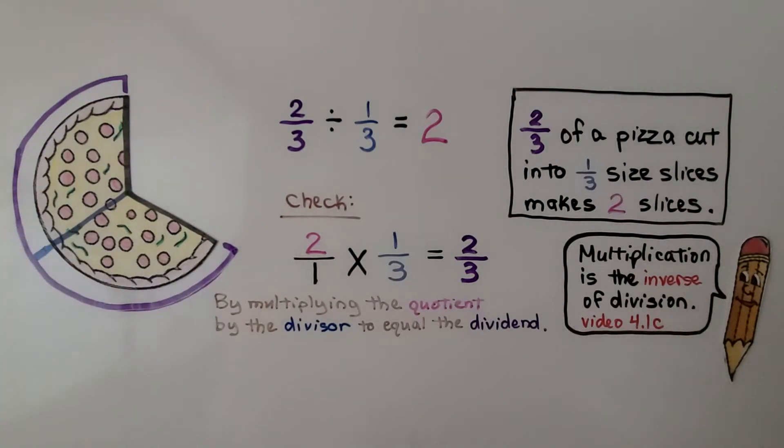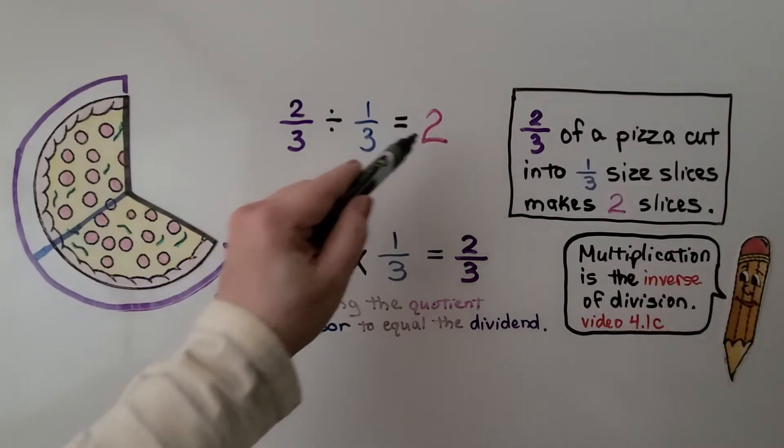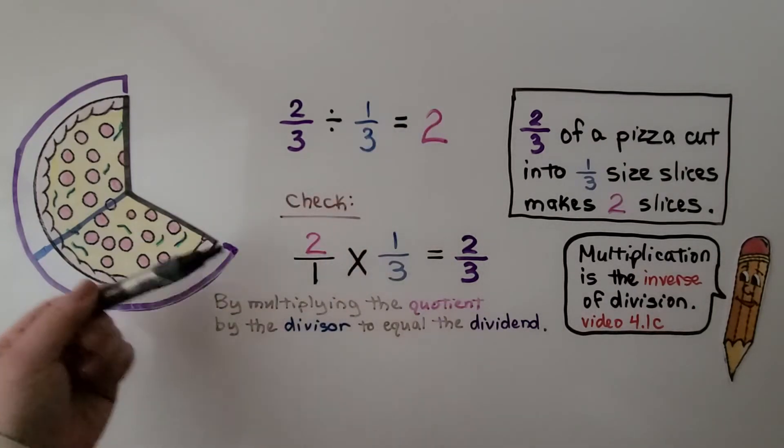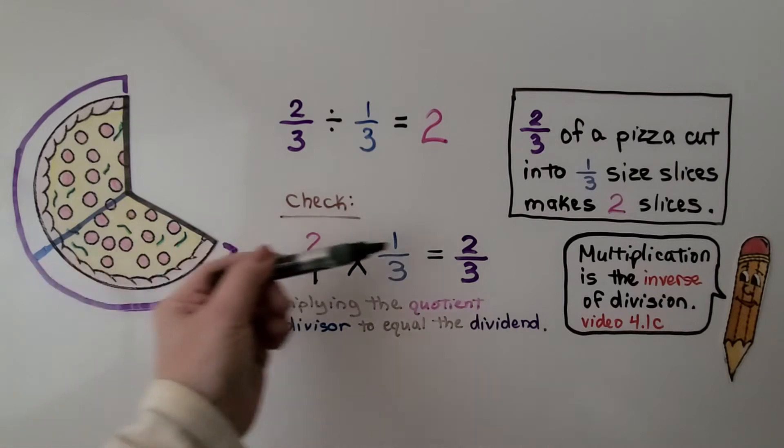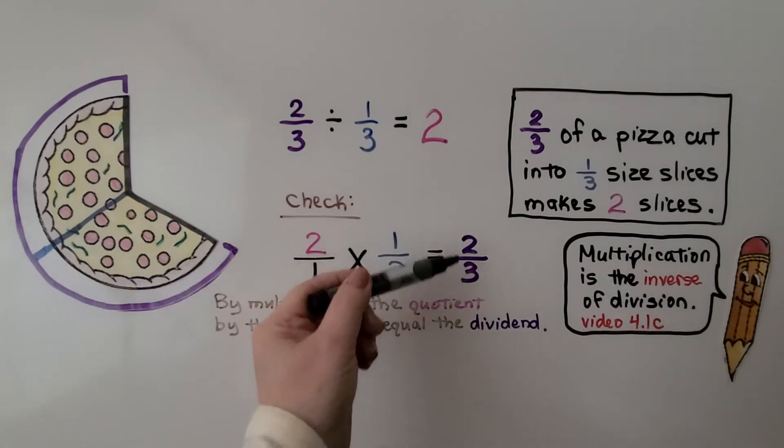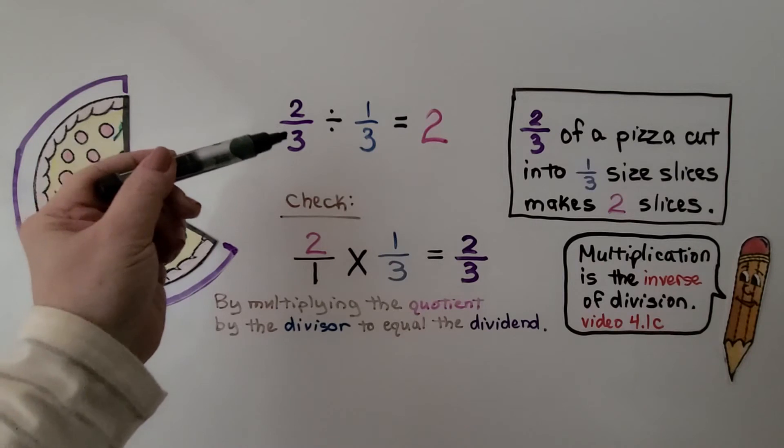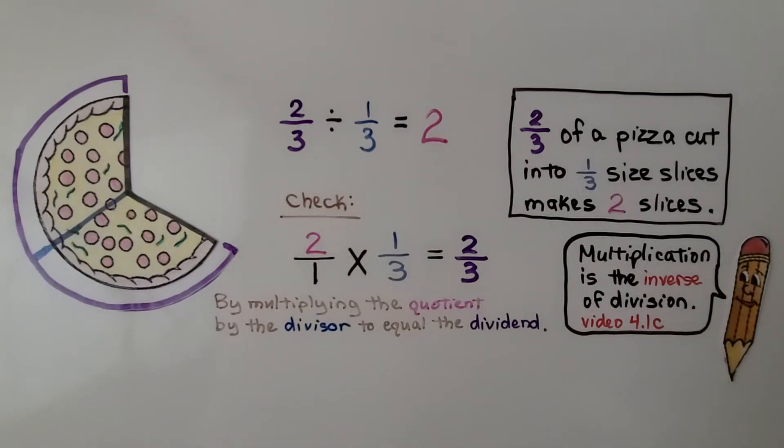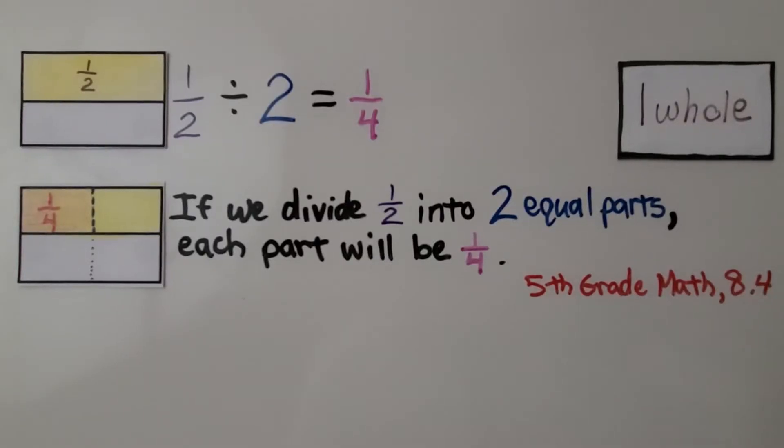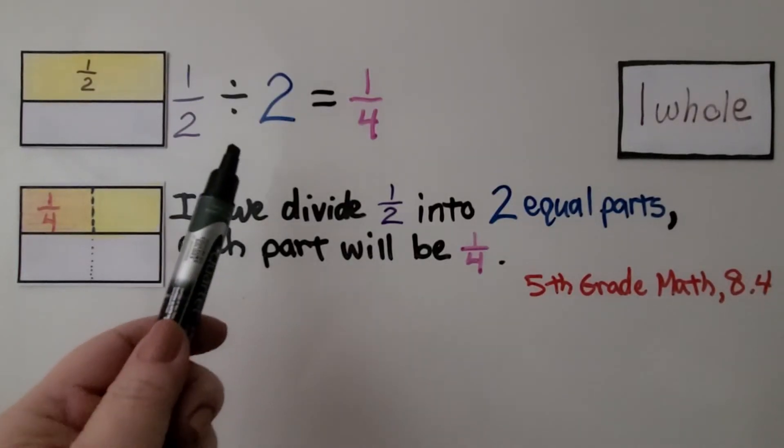We can check this with multiplication because by multiplying the quotient by the divisor, it'll equal the dividend. Multiplication is the inverse of division. We learned that in the last video, 4.1c, which will be linked in the description. We can see that we can write the whole number two over a one to make it a fraction, and we multiply straight across. Two times one is two. One times three is three. It's two-thirds, just like here, the dividend. And we know our answer is correct. It's two.